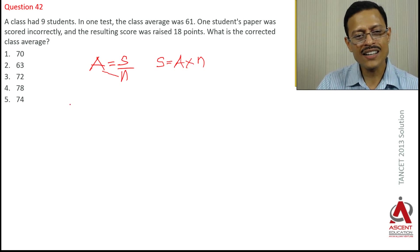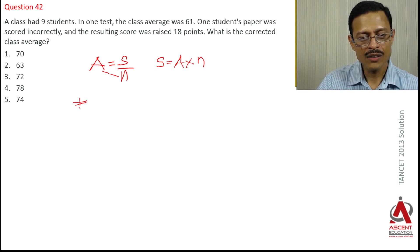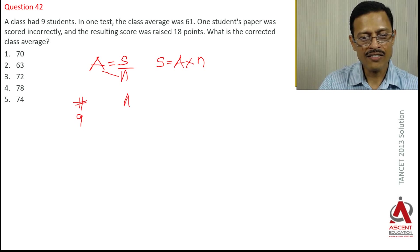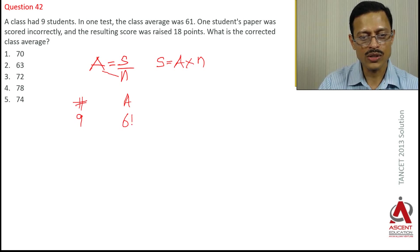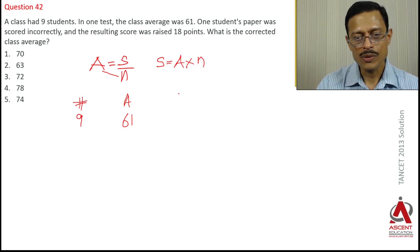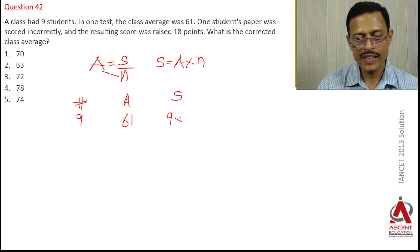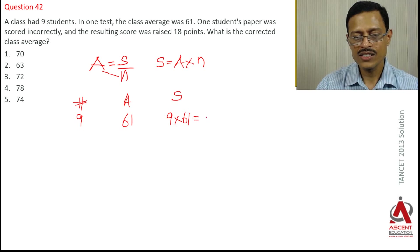The number of students is 9 and the average marks is 61. So the sum total of their marks is going to be 9 into 61, which is equal to 549.